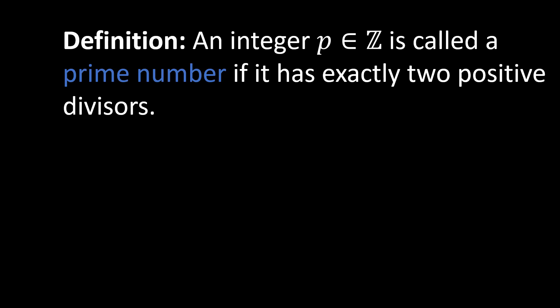So what is a prime number? A prime number is an integer that has exactly two positive divisors. This definition is a little bit different from the one you may know — that a prime is divisible by one and itself. I want to use this definition because it is a little bit more precise, and it excludes the number one from being a prime, which we don't want. We will explain later why.